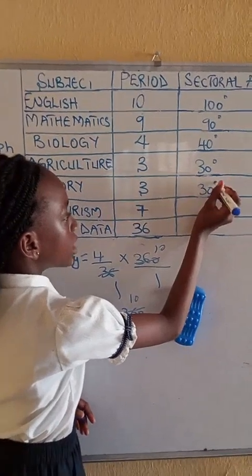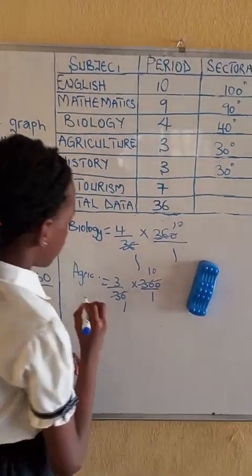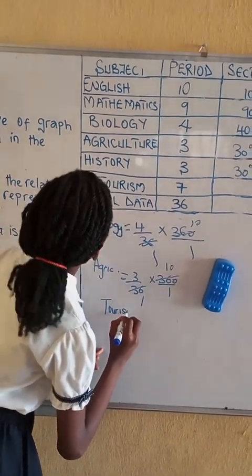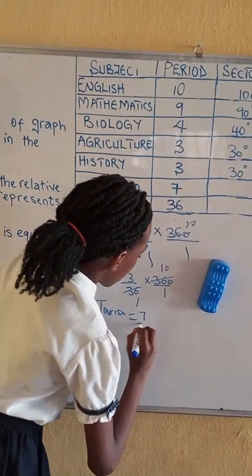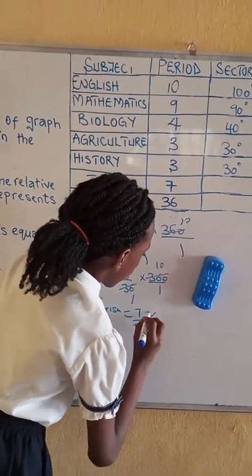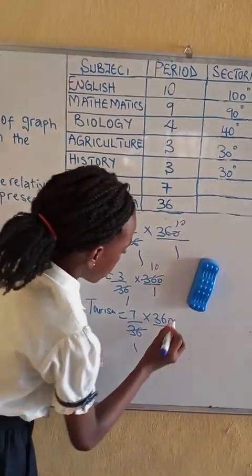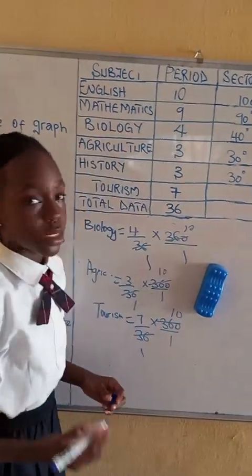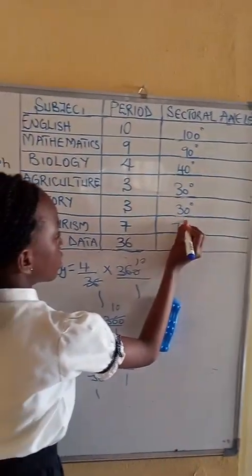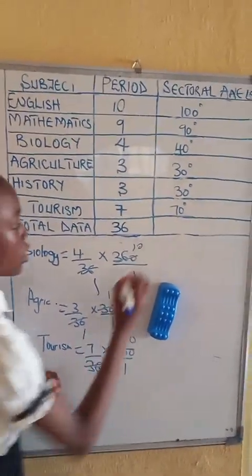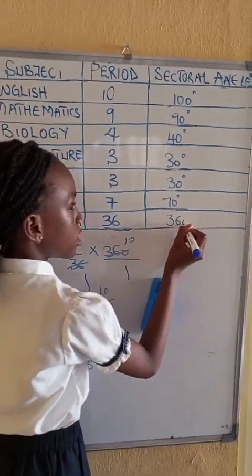Tourism equals to 7 over 36 times 360 over 1. 36 cancel 1 and 10. So 7 times 10 is 70 degrees. If you add all of the sectoral angle, it will give you 360 degrees.